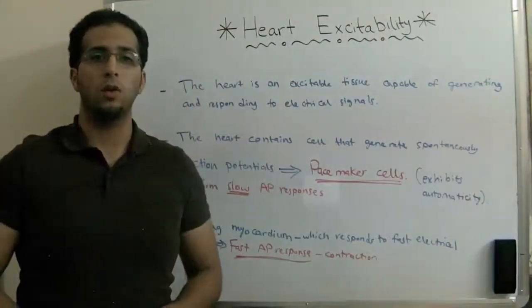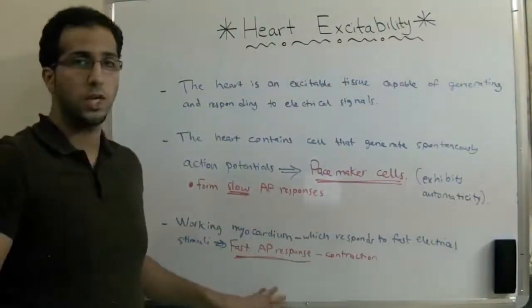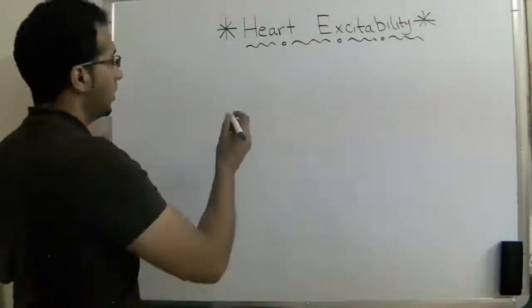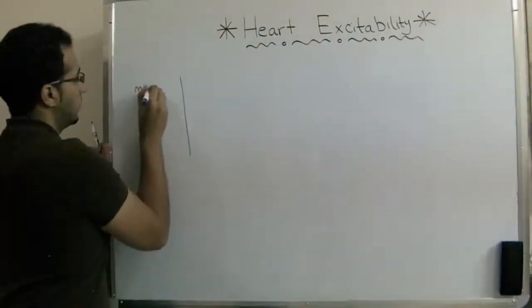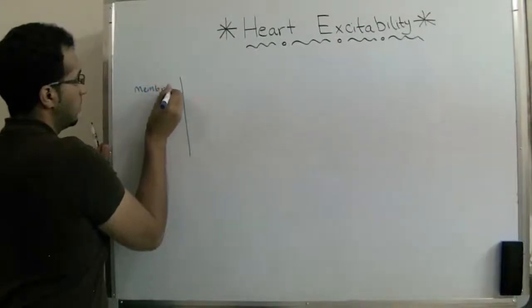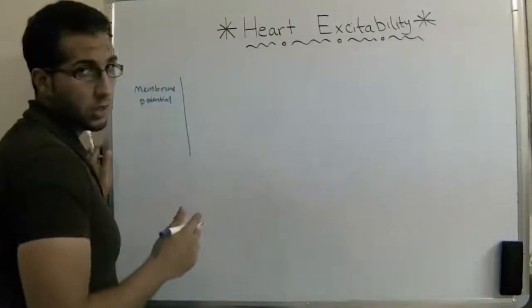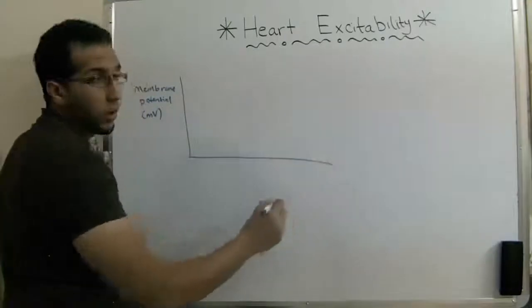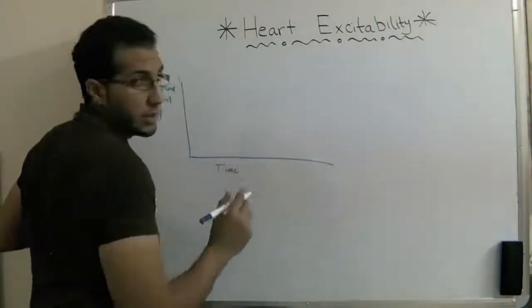Now we're going to draw a small graph to show the difference between a slow response action potential and a fast response action potential. The graph is going to have vertically the membrane potential, which is measured in millivolts, and horizontally we're going to have the time measured in milliseconds.